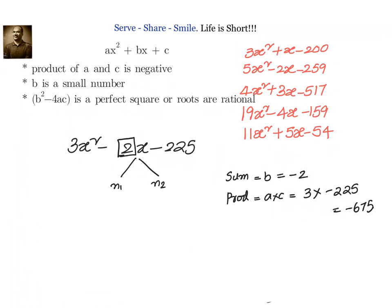For this scenario where the product of a and c is negative and b is a small number, how to find out the factors easily? First, we have to identify m1 and m2. For that, we have to take the product without the sign, 675.